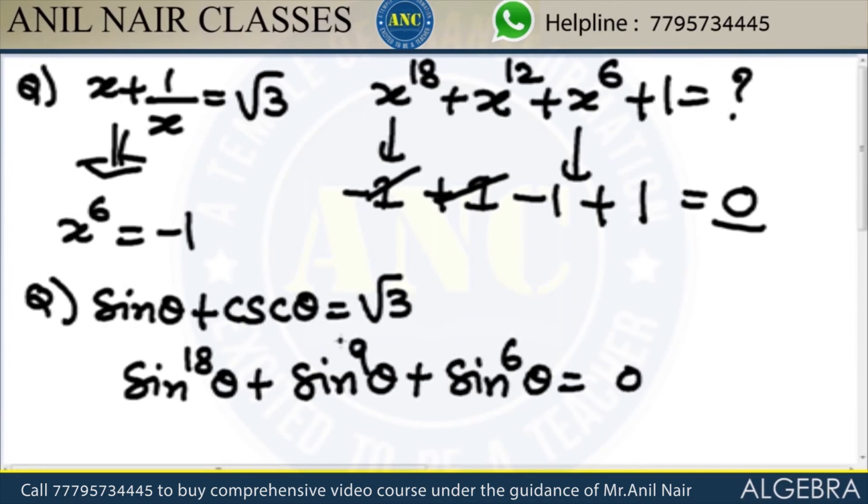If you take it as sin power 18 theta, sin power 36 theta, sin power 6 theta. Already you know, this is minus 1.